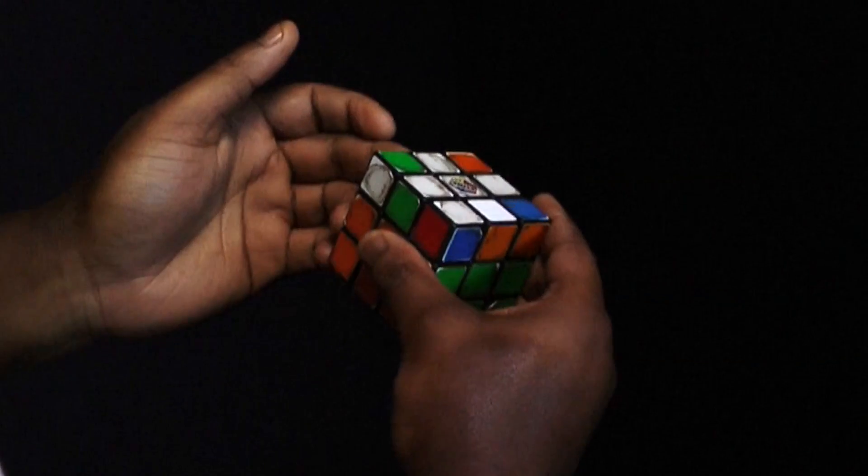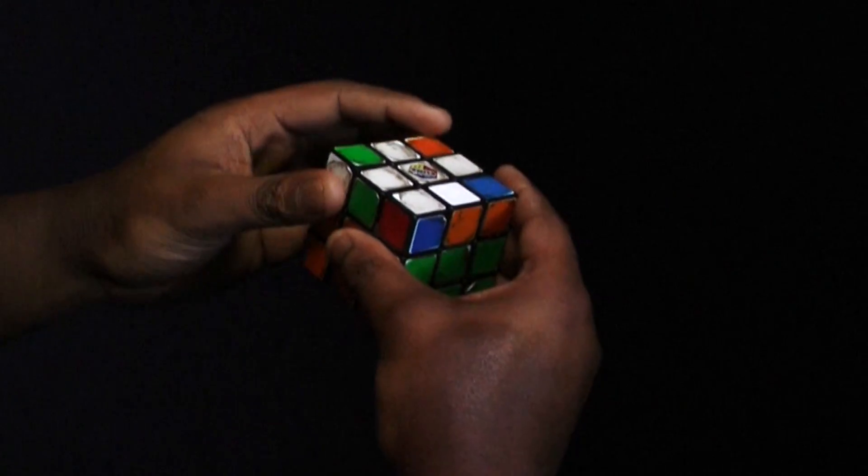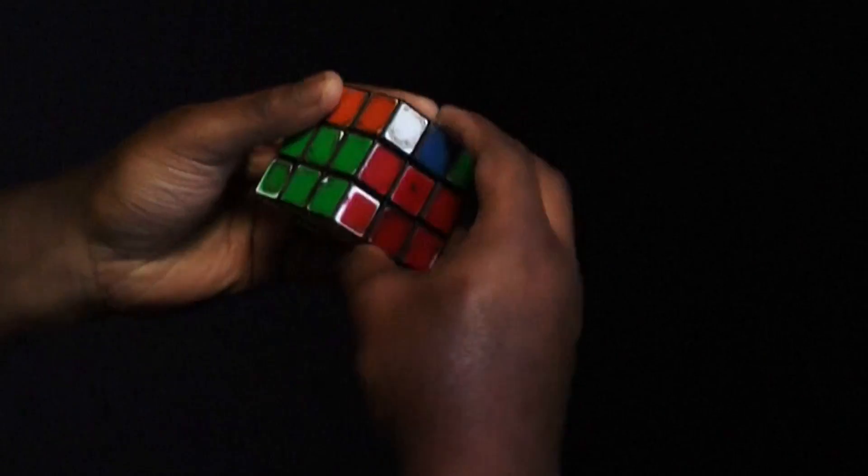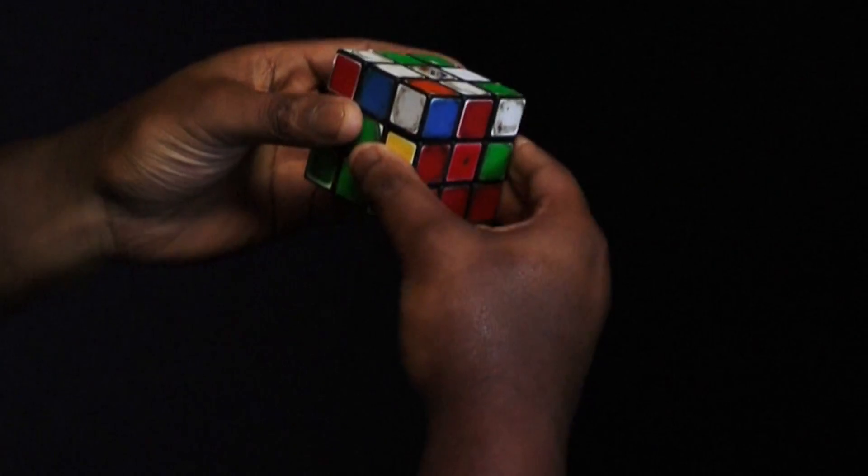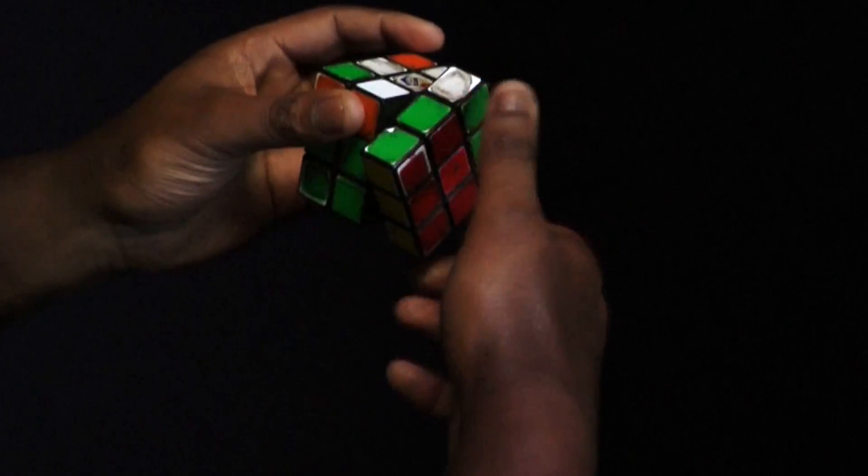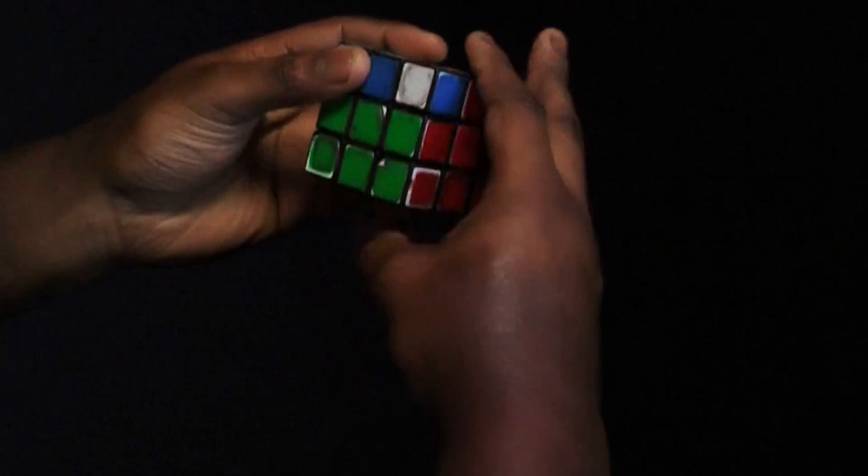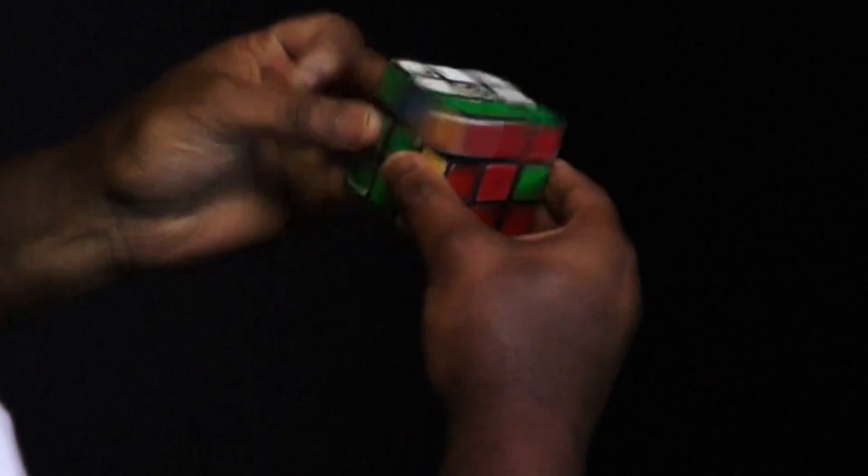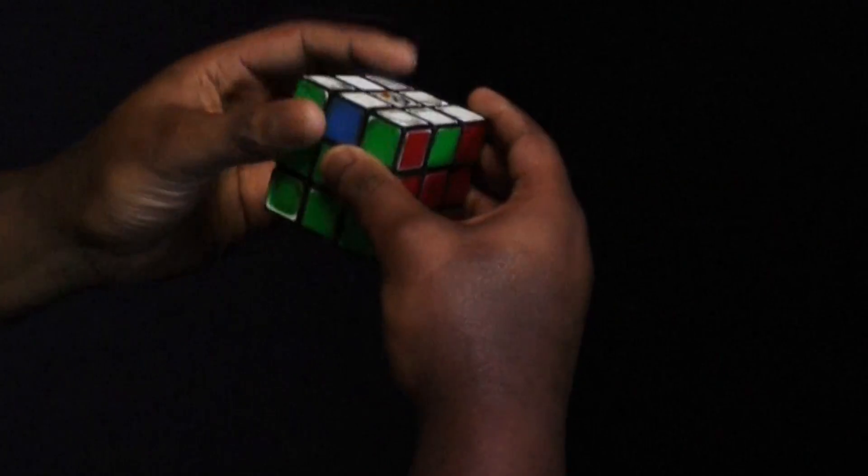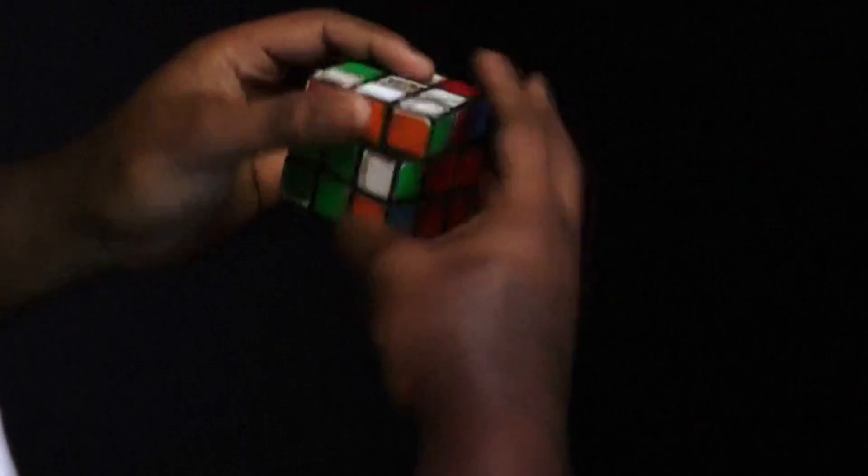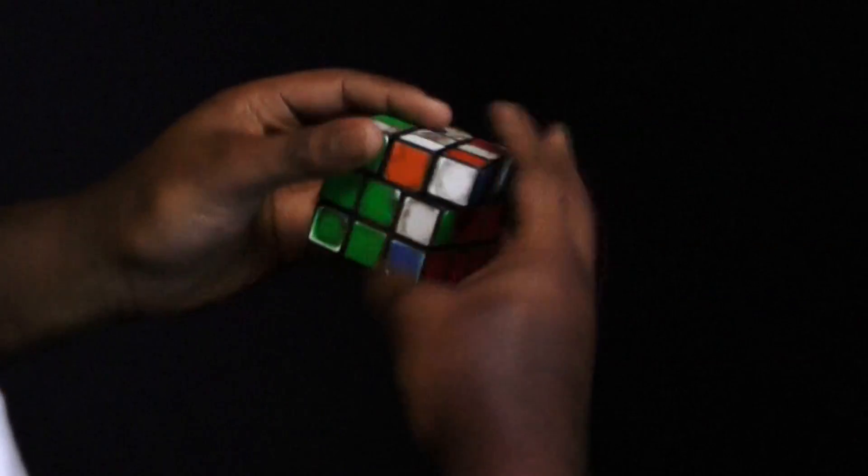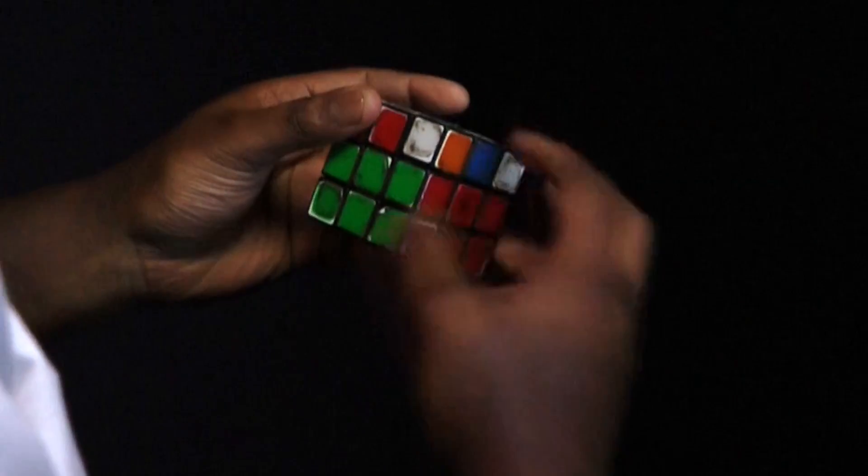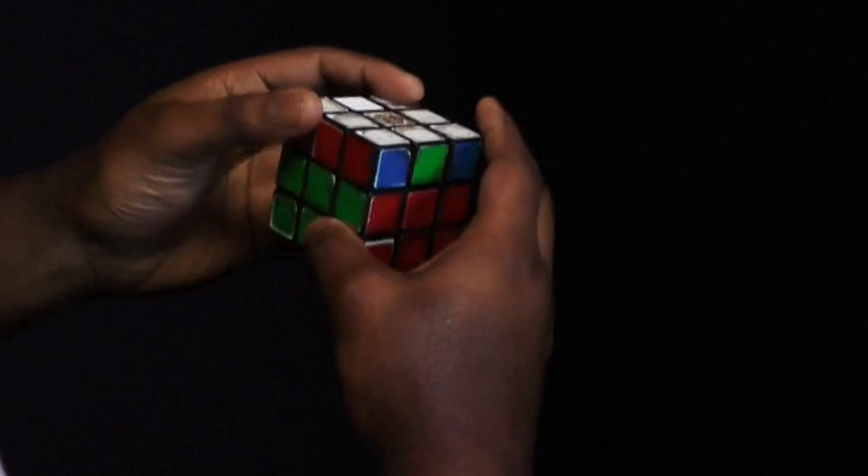Now, for this section, you're trying to, you need to do R, U, R', U, R, U2, R'. You do it again, as it gives you the corners on the top. So you may end up with something like that. For that, you do it twice. And you do it, you would do it again. And that would solve it.